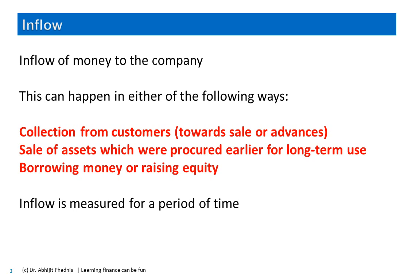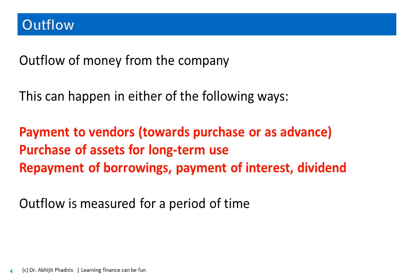Just like inflow, outflow of money can happen for three reasons. The first reason is day-to-day operations — when we make payments to vendors for different types of goods and services. The second reason, which is often a very lumped cash flow, is when we make investments — in a factory, setting up an office, or financial investments — with the idea of creating assets for long-term use. The third reason is repaying borrowings or paying interest or dividends to the people who financed us.